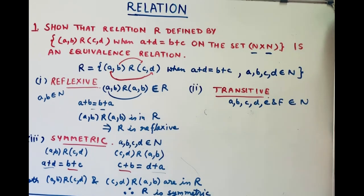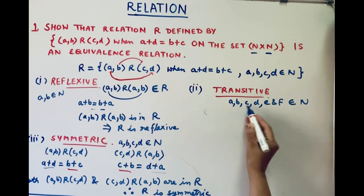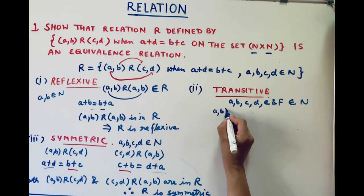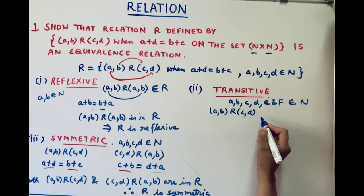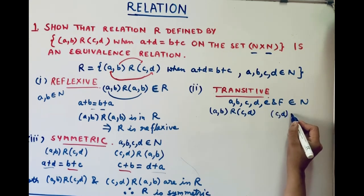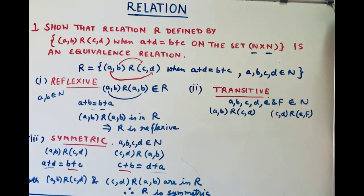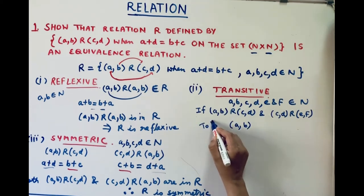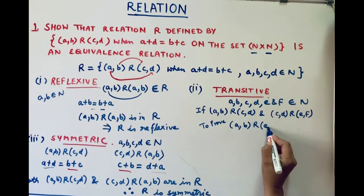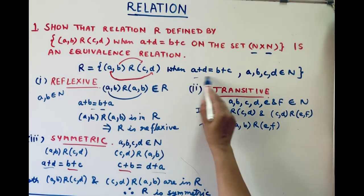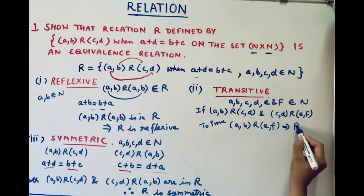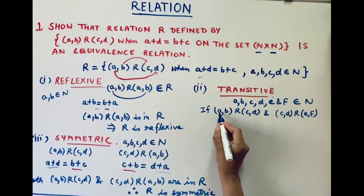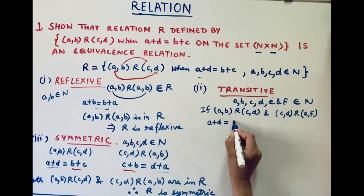Now we will check for transitive. Let's take six elements (a,b), (c,d), and (e,f) that belong to N×N. The condition for transitivity: if (a,b) R (c,d) is in the relation, and (c,d) R (e,f) is also in the relation, then we have to prove that (a,b) is also related with (e,f). If (a,b) R (c,d), we can write a plus d equals b plus c — this is equation one.